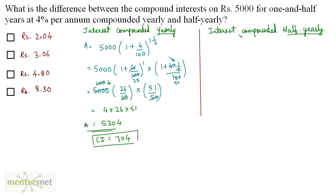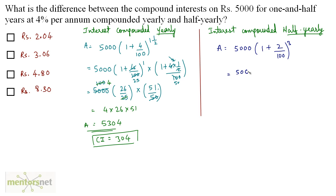Now for the half-yearly case: A = P × (1 + R/2 / 100)^(2N). With R = 4, the rate becomes 2%, and with N = 1.5 years, the time period doubles to 3. So A = 5000 × (1 + 2/100)^3 = 5000 × (51/50)^3.